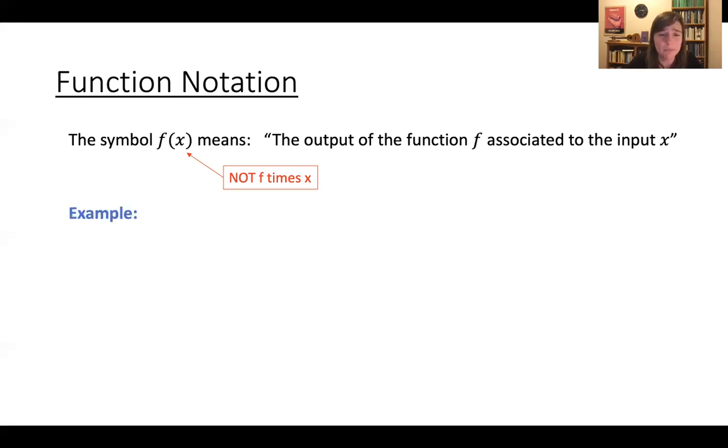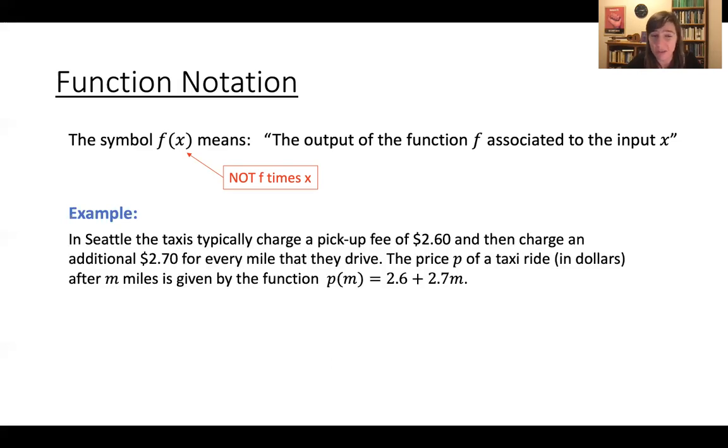Let's do an example. So in Seattle, the taxis typically charge a pickup fee of $2.60 and then charge an additional $2.70 for every mile that they drive. And now you can write the price p of a taxi ride in dollars after m miles by this function. And we write output p of m. So the output, if the input is m miles. So the price after m miles is equal to 2.6 plus 2.7m. This 2.6 is your flat fee that you're charged even if you don't do anything. And then your $2.70 for each mile afterwards is represented here.